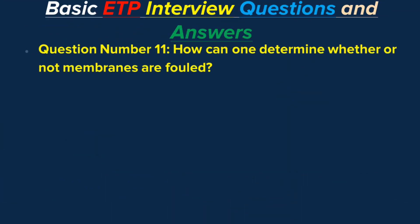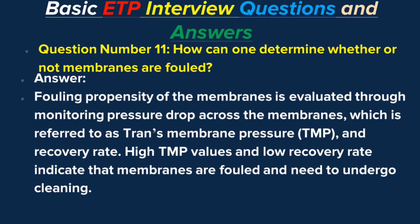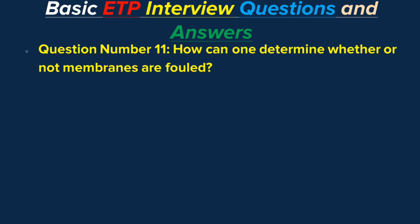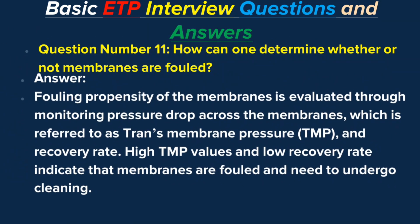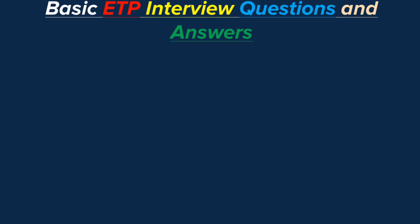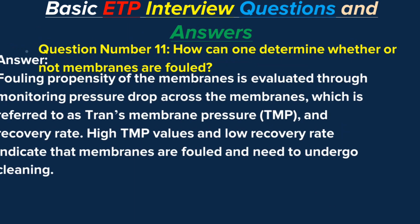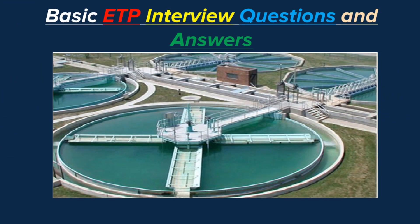Question number 11: How can one determine whether or not membranes are fouled? Answer. Fouling propensity of the membranes is evaluated through monitoring pressure drop across the membranes, which is referred to as transmembrane pressure (TMP), and recovery rate. High TMP values and low recovery rate indicate that membranes are fouled and need to undergo cleaning.